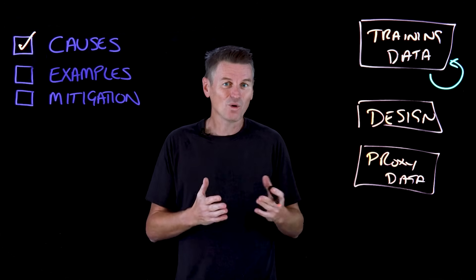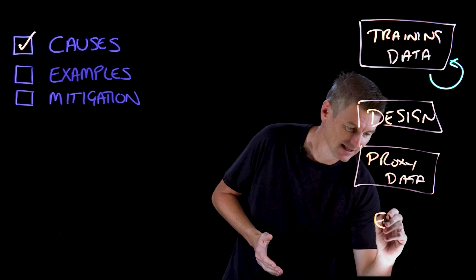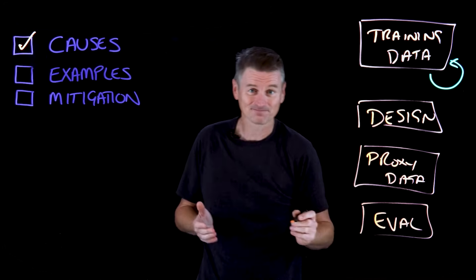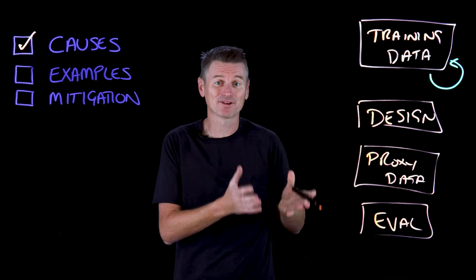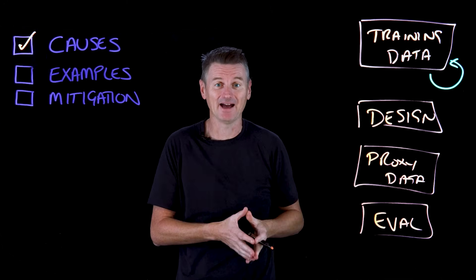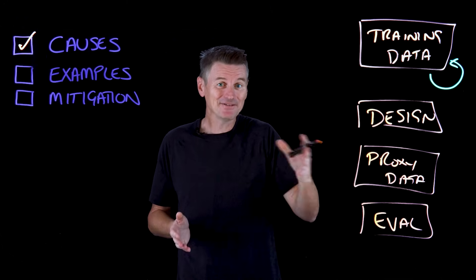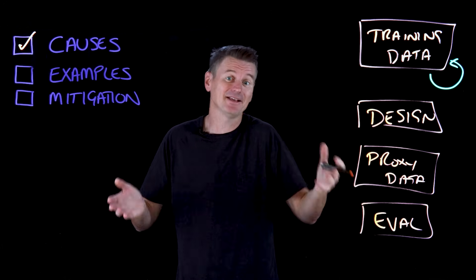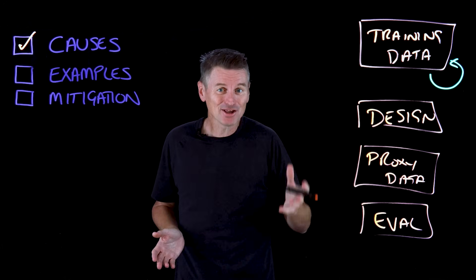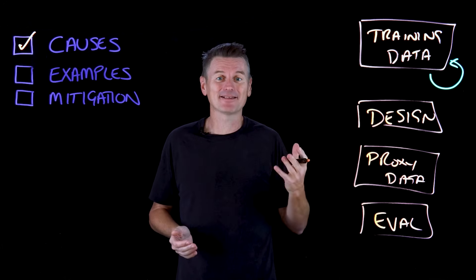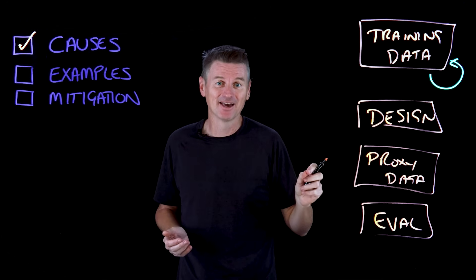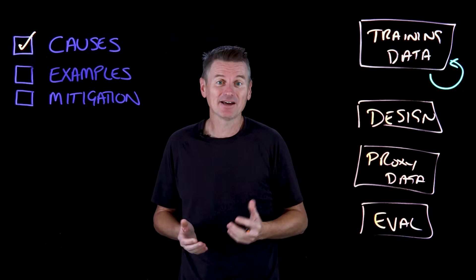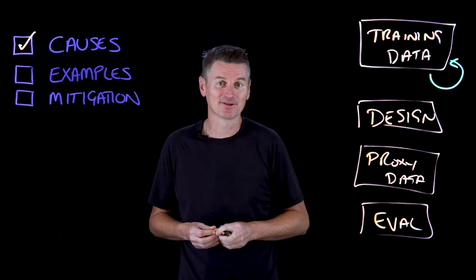There are also biases in evaluation — how we interpret the results from an AI algorithm. Even if the algorithm is completely neutral and data-driven, how an individual or a business applies the algorithm's output can lead to unfair outcomes depending on how they understand those outputs.